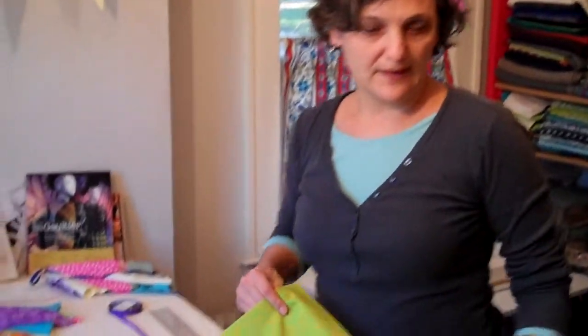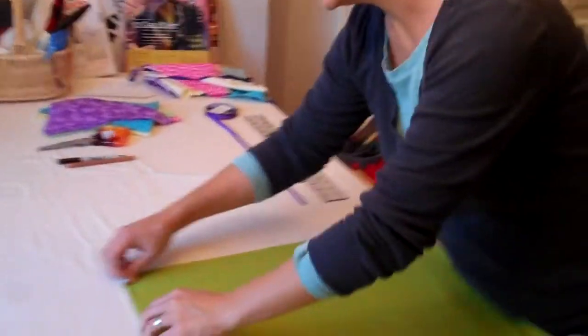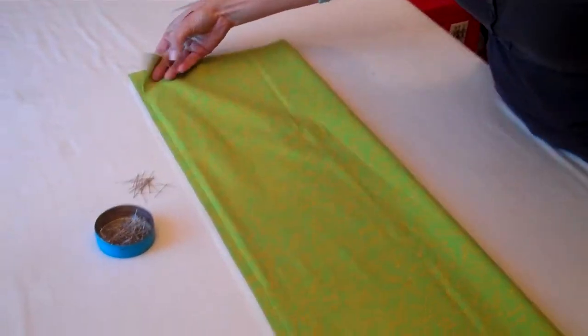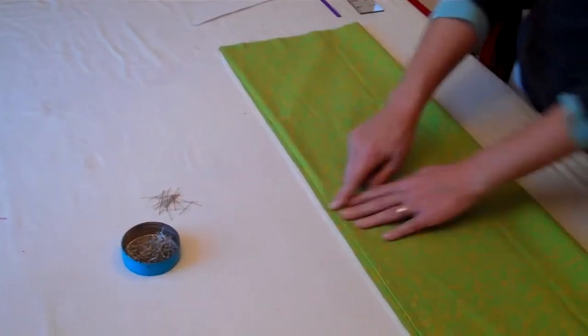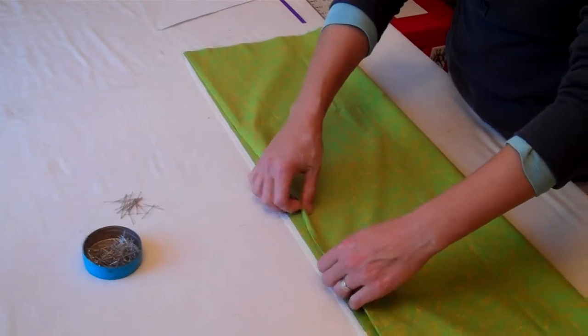Just get your fabric folded in quarters, selvedge to selvedge and again this way, quarters lengthwise. If it has a white selvedge like a lot of fabrics do, just go ahead and rip that off because you don't want that on your flag.